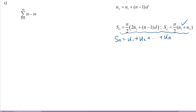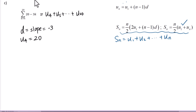Let's go to C. This sigma notation means u sub 4 plus u sub 5 plus u sub 20. We do know d equals slope equals negative 3. U sub 4 equals 20 minus 3 times 4 equals 8. U sub 20 equals 20 minus 3 times 20 equals negative 40.